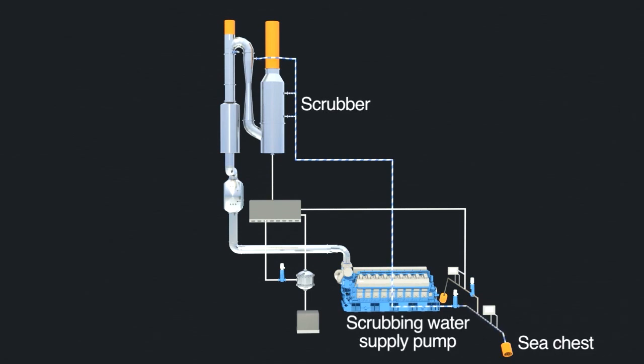The wash water supply pump feeds the water from the sea chest directly into the three different scrubbing stages, as indicated with the colored piping.